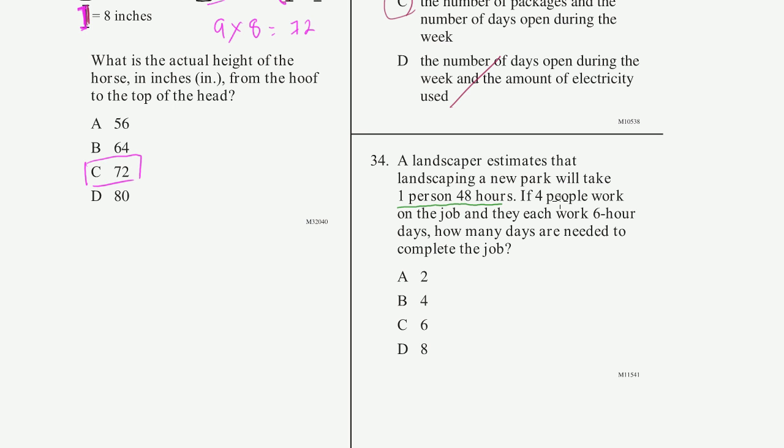how much is 4 people going to take? One fourth as long. So 48 divided by 4 is going to be equal to 12 hours. If four people are each working 12 hours, that's the same thing as one person working 48 hours, assuming that you can divide the job up in that way. So these four people are going to take 12 hours,